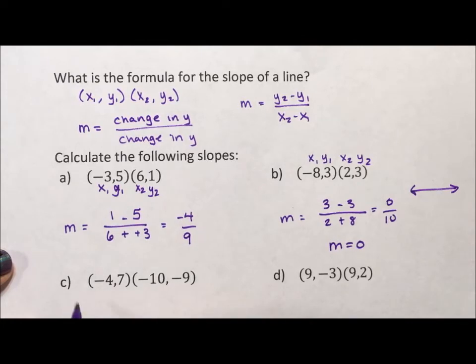Alright, x sub 1, y sub 1, x sub 2, y sub 2, m equals y sub 2 minus y sub 1 over x sub 2 minus x sub 1. This is negative 16 over negative 6. I have to reduce out the negatives and reduce the fraction in general. So negative, negative, positive. I'm going to reduce it by dividing out a 2 and get 8 thirds.